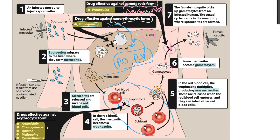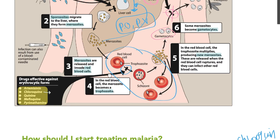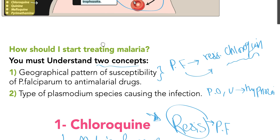For drugs effective against the gametocyte form — to inhibit disease transmission — we use Primaquine for all malaria species, whether P. falciparum, P. ovale, or P. vivax. This prevents transmission to another human via the mosquito.